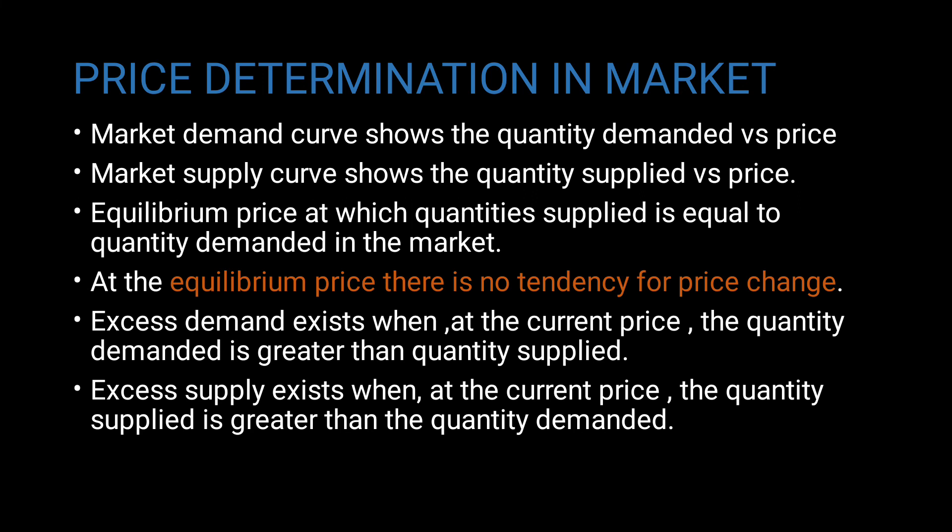The market supply curve shows quantity supplied versus price. The equilibrium price is that at which quantity supplied equals quantity demanded. At the equilibrium price, there is no tendency for price to change. Excess demand exists when at the current price the quantity demanded is greater than quantity supplied. Excess supply exists when at the current price the quantity supplied is greater than quantity demanded.